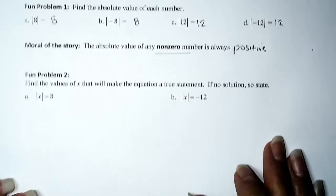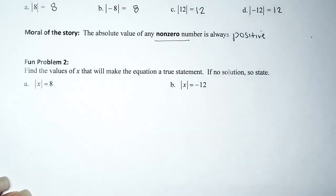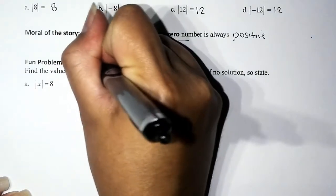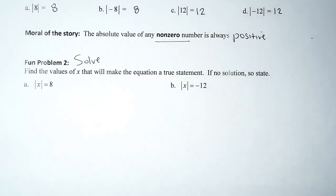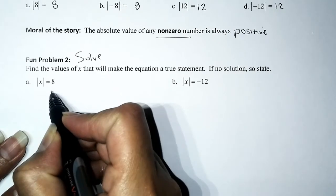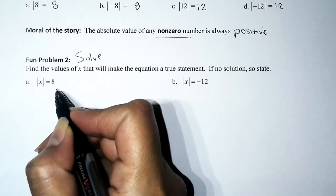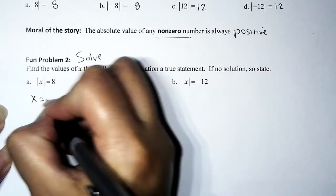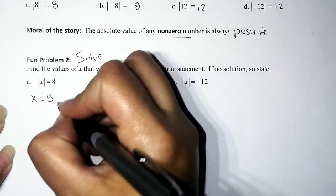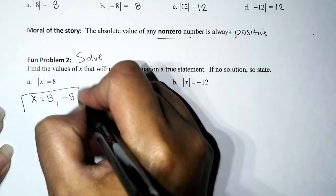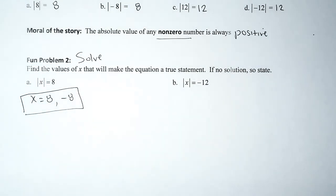Problem number two: the directions read, find the values of x that will make the equation a true statement, or if no solution, state so. We're going to solve these by inspection — just by thinking. We have absolute value of x equals 8. What number or numbers are 8 units away from 0 on the number line? One solution is 8, since absolute value of 8 is 8, and another solution is negative 8.